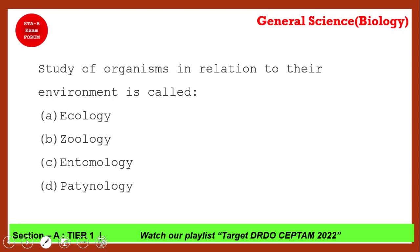The study of organisms in relation to their environment is called what? This is a simple one. The correct answer is ecology. Ecology is the study of organisms in relation to their environment. Geology is the study of the earth, and entomology is the study of insects.